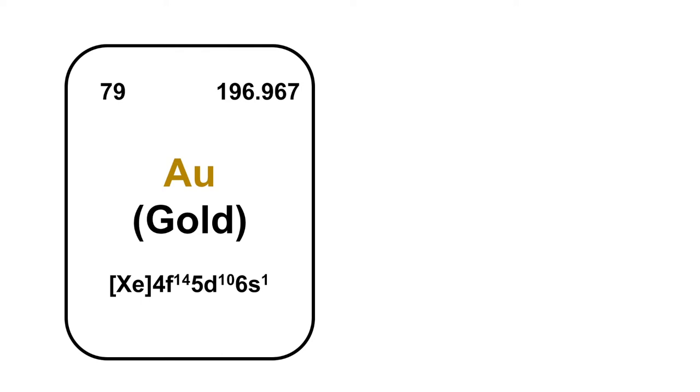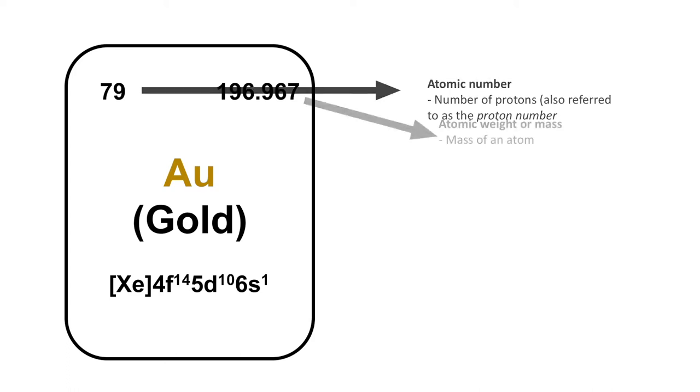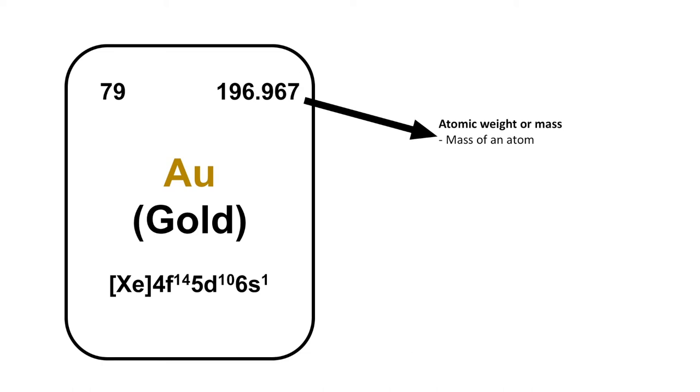Looking at a particular atom in the periodic table, we're looking at gold, a favorite of geologists. In the middle we usually have the symbol and sometimes the name. Gold has a symbol of Au which is derived from the Latin for gold, aurum. We usually have the atomic number, also known as the proton number, which represents the number of those positively charged protons in the nucleus. Then we have the atomic weight or the atomic mass, which is the collective weight of the nucleus of that atom.